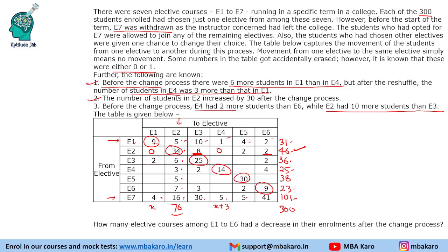Looking at the next row: it has 6, 8, and then 8 plus 27 is 35. We need one more to reach the total, so one of the missing values must be 1. Then we have 25, 5, and 5 plus 18 is 23. We need two more to complete the total, so the only possible values are 1 and 1.